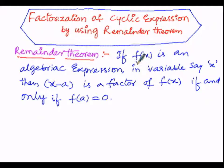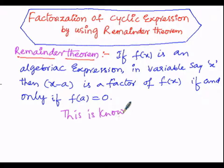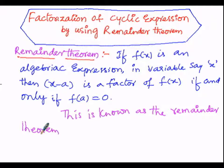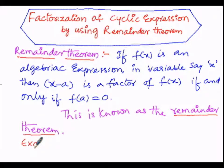Supposing the algebraic expression as F of x where the variable is x, x minus a will be the factor of that particular algebraic expression F of x if and only if F of a must be equal to 0. This is known as the remainder theorem. Let us now go through one example by utilizing this remainder theorem in the factorization of the cyclic expression.